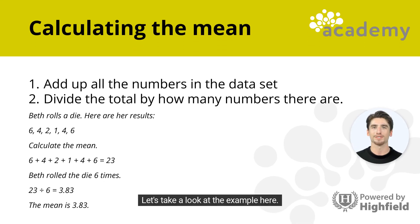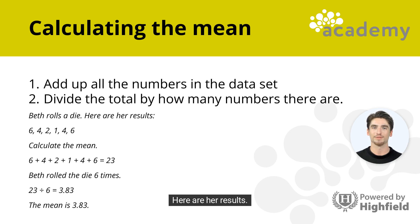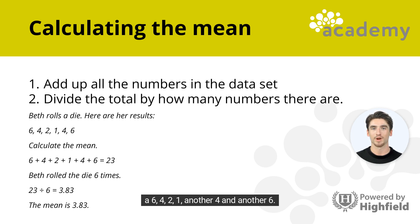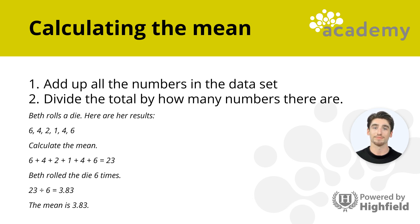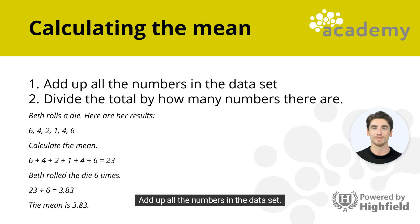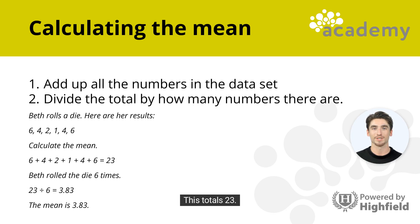Let's take a look at the example here. Beth rolls a die. Here are her results: a 6, a 4, a 2, a 1, another 4, and another 6. Following the steps to calculate the mean outcome of Beth's die rolls — Step 1: add up all the numbers in the dataset. We must add up 6, 4, 2, 1, 4, and 6. This totals 23.